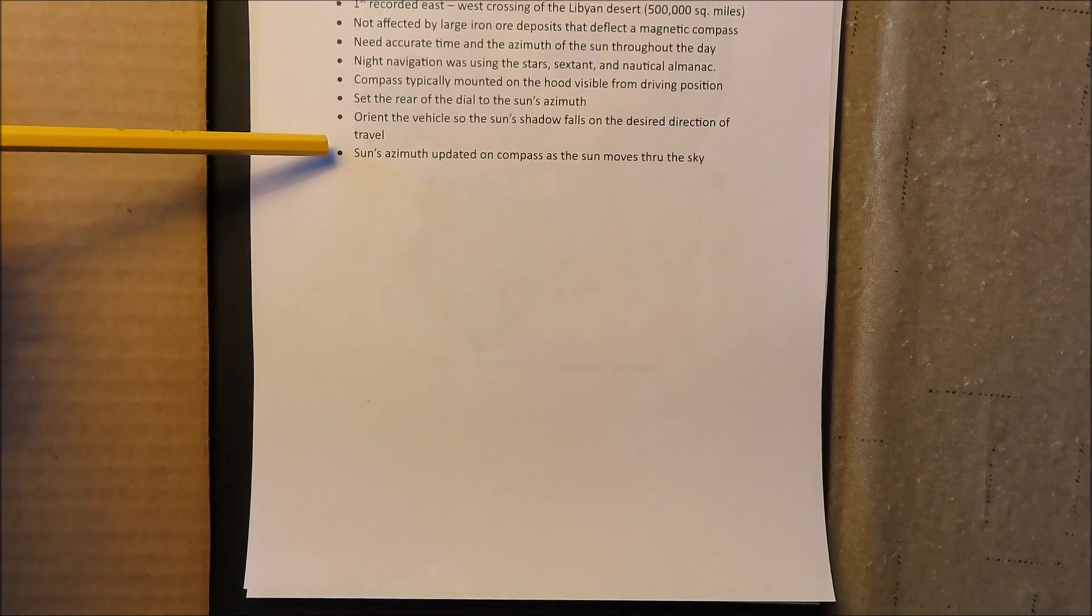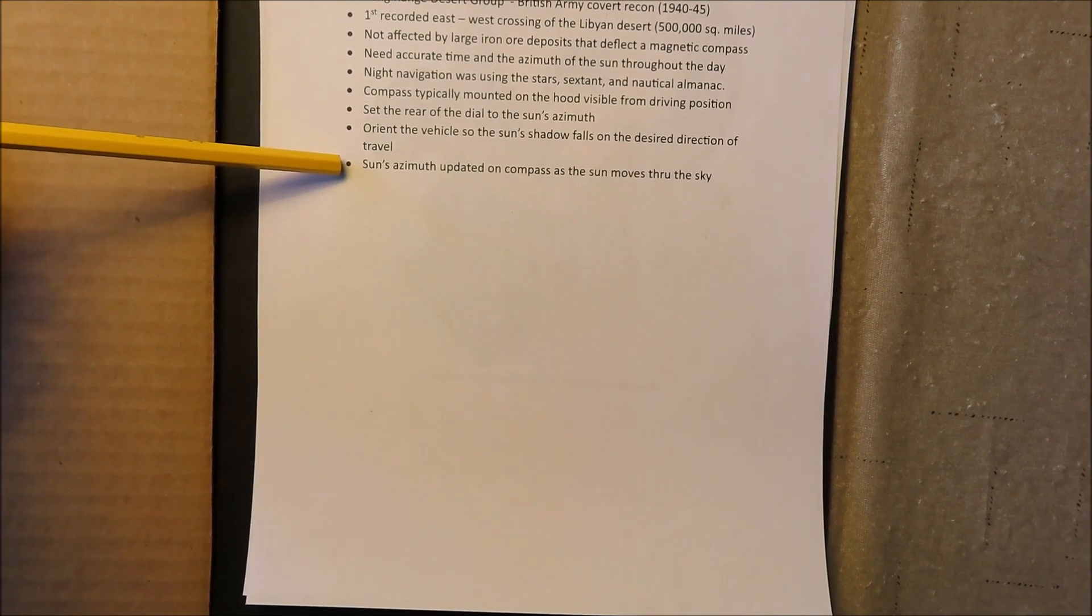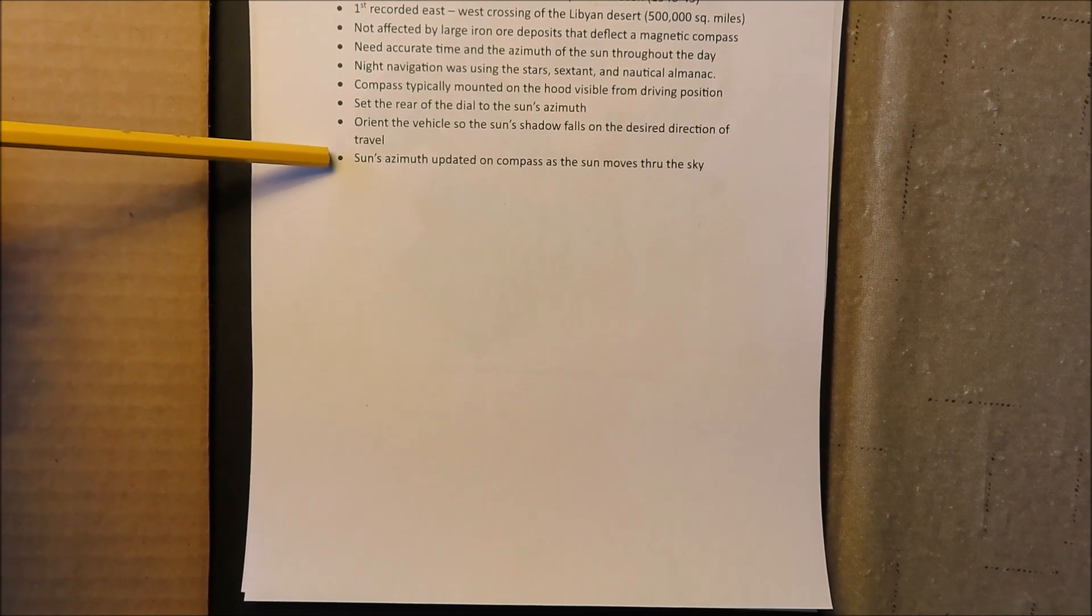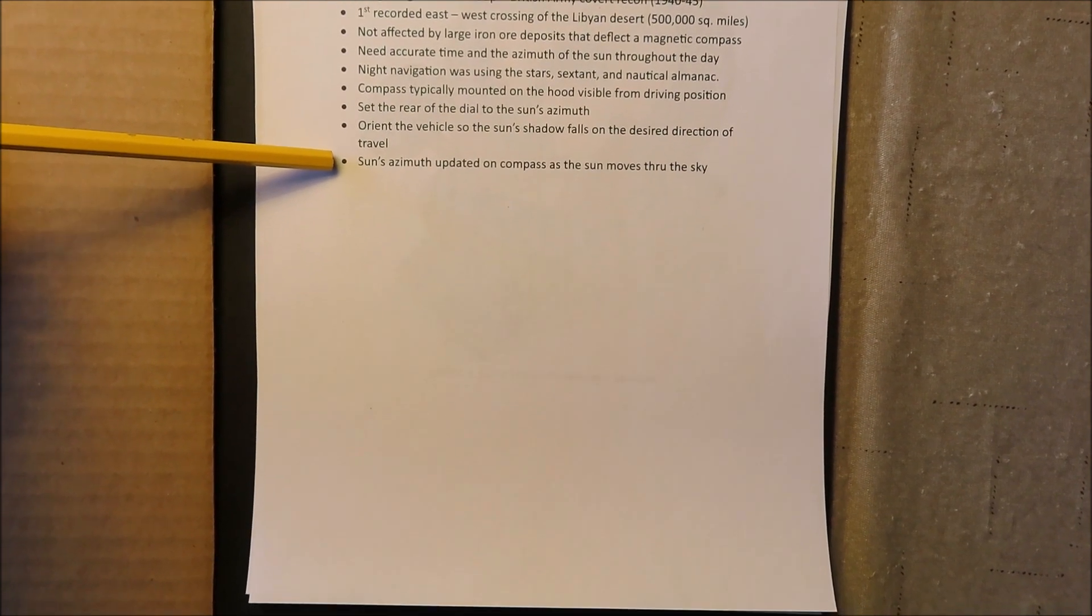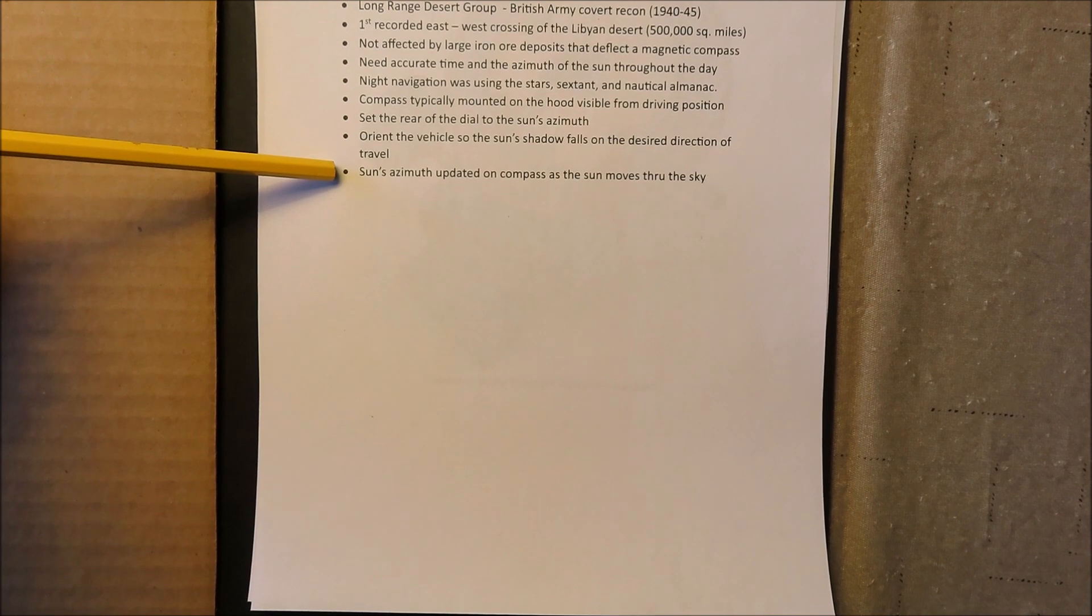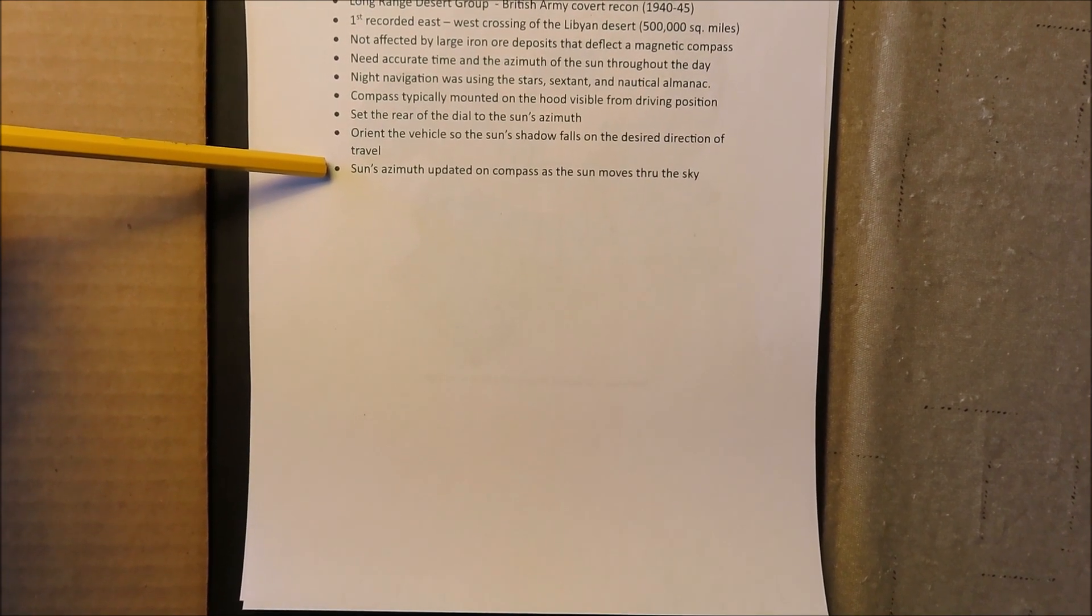Now the sun moves across the sky during the day. So a given setting was only good for about 10 or 15 minutes. And then they had to update the azimuth of the sun as it moves through the sky.